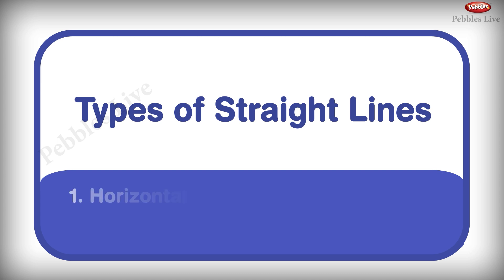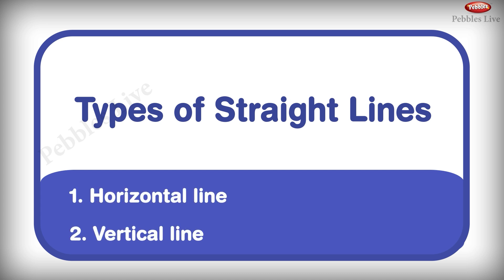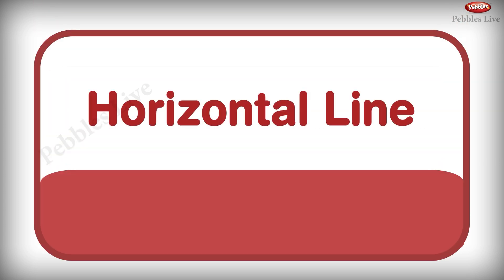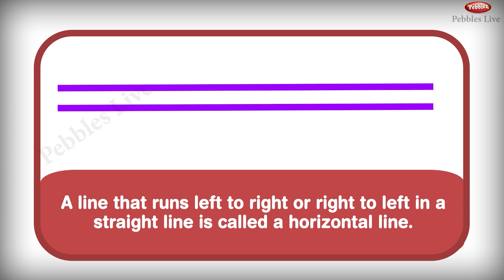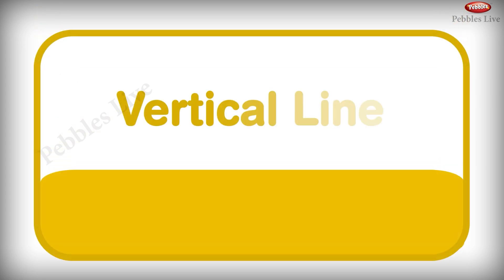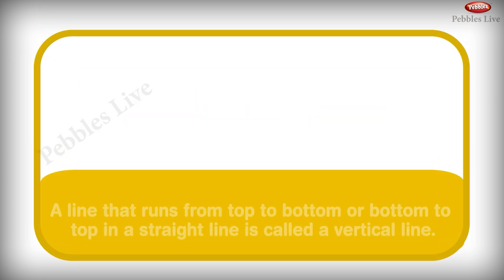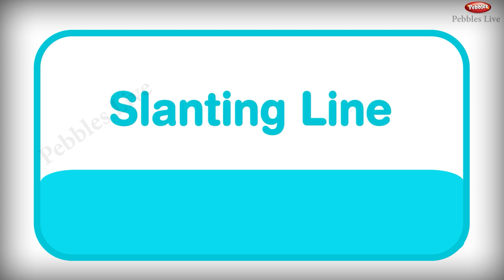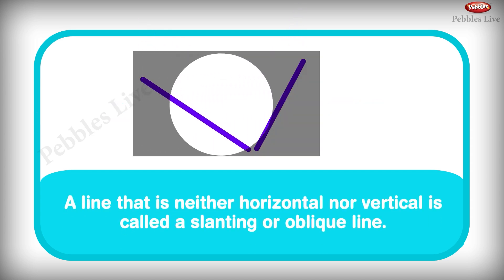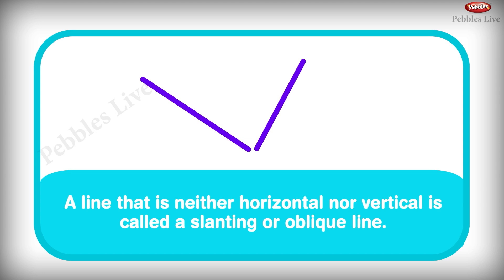Types of straight lines: 1. Horizontal line, 2. Vertical line, 3. Slanting line. A line that runs left to right or right to left in a straight line is called a horizontal line. A line that runs from top to bottom or bottom to top in a straight line is called a vertical line. A line that is neither horizontal nor vertical is called a slanting line.